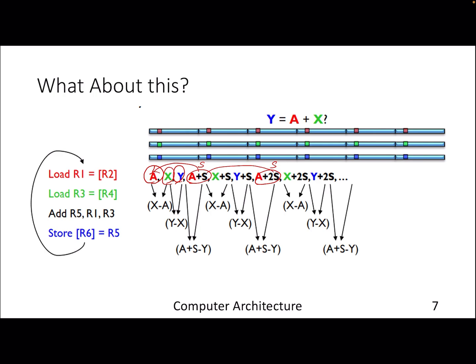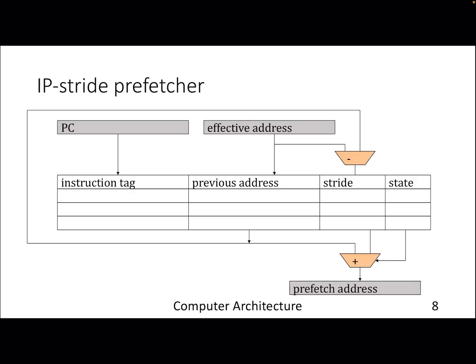A prefetcher called IP-stride prefetcher is pretty common in all commercial processors. You will find it in your Intel machines also. The idea is pretty simple. It learns the stride for a given IP. IP is instruction pointer or the program counter. You store your program counter. This is the structure or hardware implementation of this prefetcher.